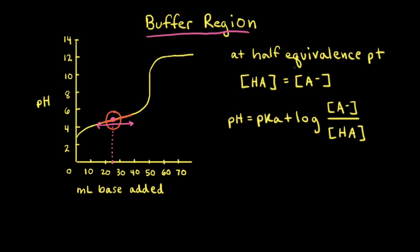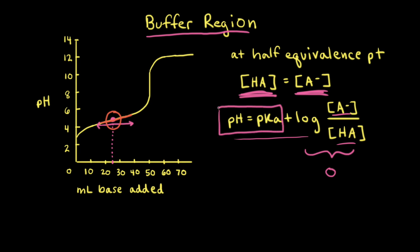We can calculate the pH at the half equivalence point because half of the initial acid has been neutralized and converted into the conjugate base. Therefore, the concentration of weak acid equals the concentration of the conjugate base. Using the Henderson-Hasselbalch equation, when these concentrations are equal their ratio is 1 and log(1) = 0, so pH = pKa. To find the pKa of a weak acid from a titration curve, simply read the pH at the half equivalence point.